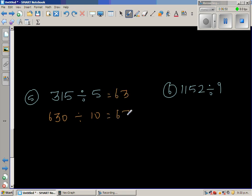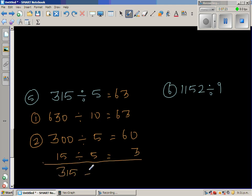Or you can go 300 divided by 5. This is the first strategy. This is the second strategy. 300 divided by 5 is 60. We need to divide 15 by 5, which is 3. So the answer, both ways, 315 divided by 5 is 63.